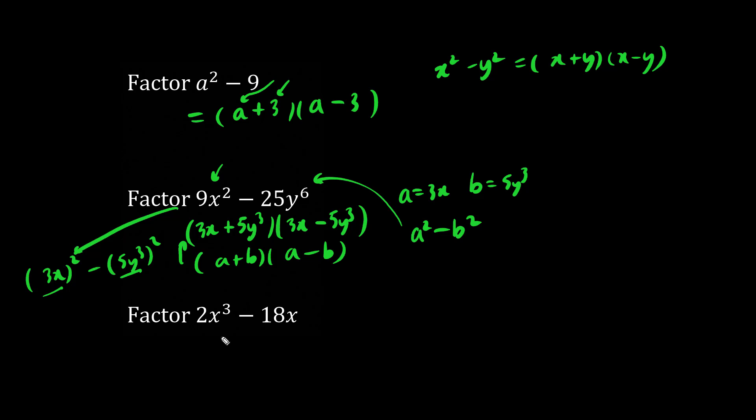Now when factoring, it's always a good idea to pull out the GCF. The greatest common factor here is 2x. We have x squared minus 9. Because when we multiply this out, distribution, we get 2x times x squared is 2x cubed. 2x times negative 9 is minus 18x.